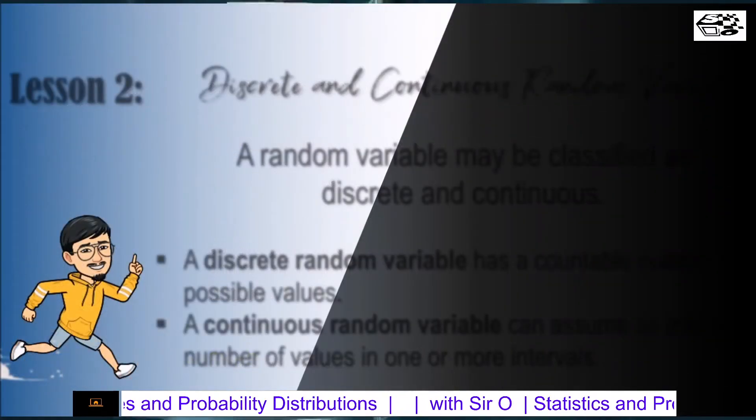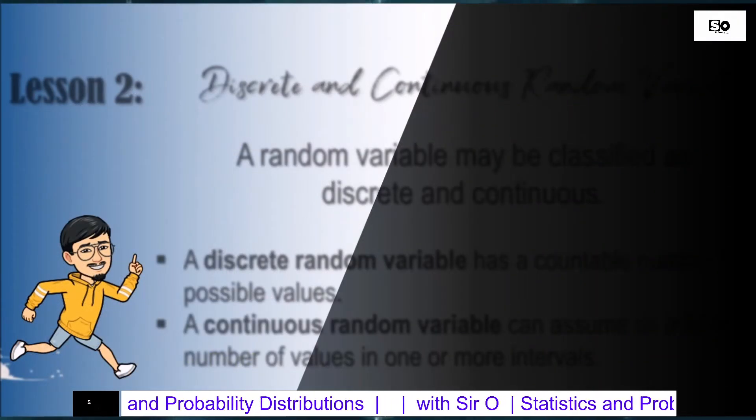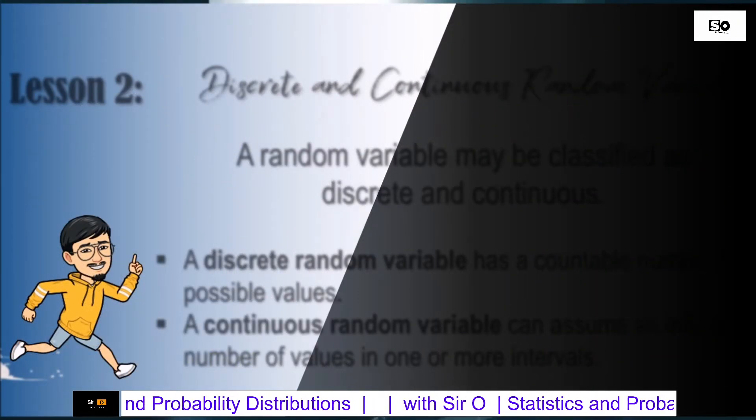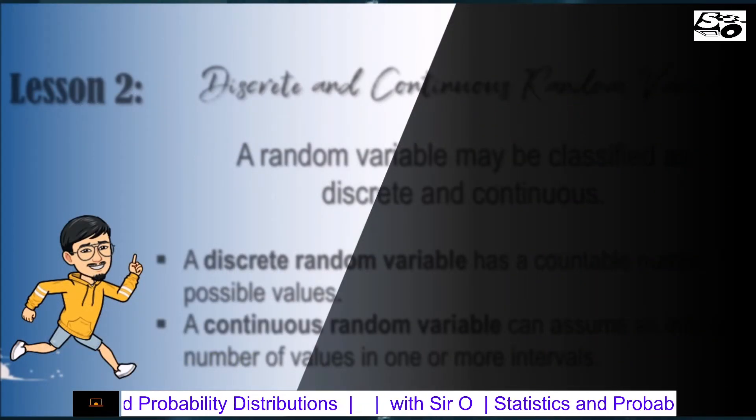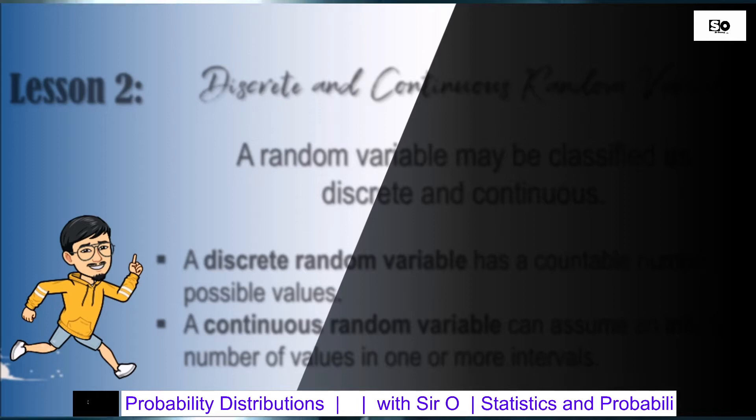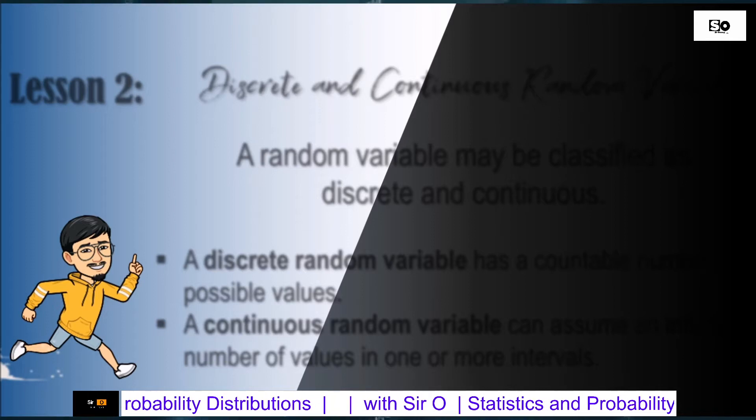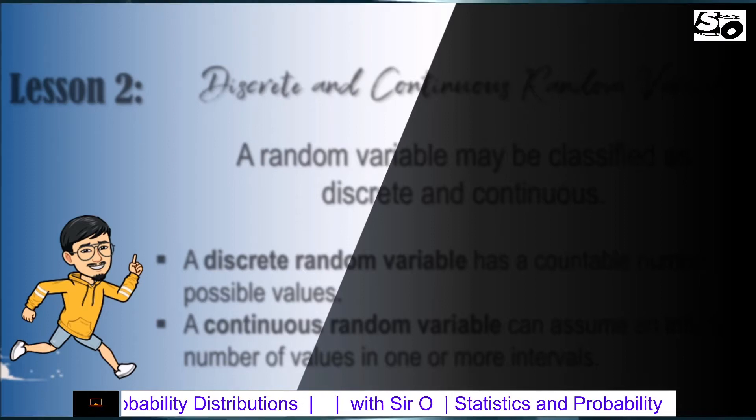For more examples in finding the random variable, kindly open your module on page 7. Now let us proceed to Lesson 2: Discrete and Continuous Random Variable.